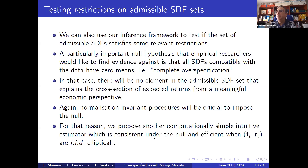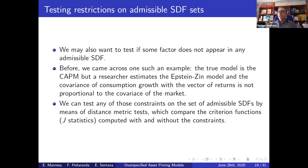We could also test that some factor is irrelevant even under under-identification. This means testing that the risk prices for this particular factor are zero. For example, if the true model is the CAPM but you use an Epstein-Zinn type model that uses both the market portfolio and consumption growth as risk factors, then the consumption growth risk price is going to be zero.